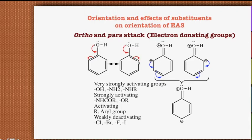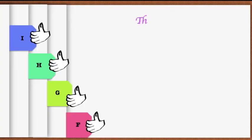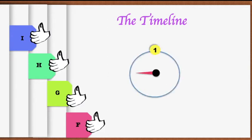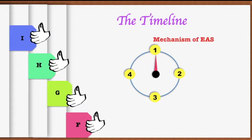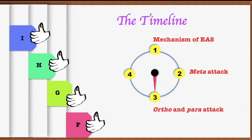This is another interesting feature: halogens, even though they are weakly deactivating, are ortho and para directors. In the subsequent slides we will see why. Before proceeding, let us review what we have covered: the mechanism of electrophilic aromatic substitution reaction, meta attack generally shown by electron-withdrawing groups, and ortho and para attack generally shown by electron-donating groups.